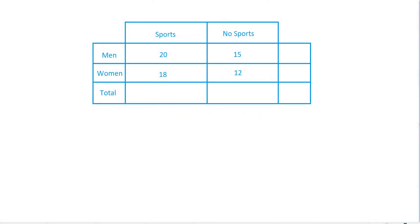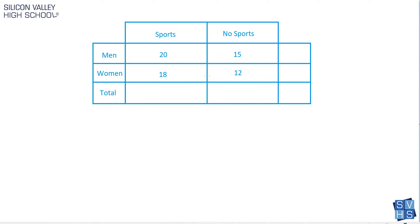Two-way tables are ways to organize data so that you can interpret potential outcomes. There's more than one variable here. Not only do you have men and women, but you also have sports and not sports. So you could have men who play sports, men who don't, women who play sports, women who don't. And so the tables look like this, and this is how they're organized.